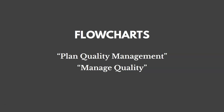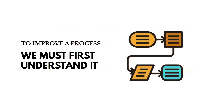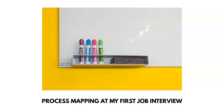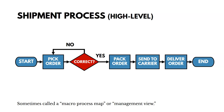Another tool we could use is flow charts. These are tools we could use in Plan Quality Management or the Manage Quality process. They depict the sequence of process steps as well as inputs and outputs. If we want to improve a process or fix an issue, we really have to understand it first, and flow charts help us do that. Here are some of the symbols used on a process map — you don't necessarily have to memorize these, but they help identify potential quality issues when looking at the process flow.